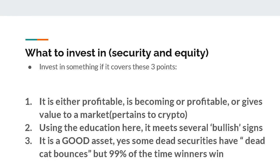A lot of people are wondering what they should be investing in. There are three big points to cover every time you're entering a position: you want to make sure the asset is either profitable, becoming profitable, or gives value to a market — which is more pertaining to cryptocurrencies. You want to meet several bullish signs and look at the fundamentals. You need to know what you're investing in — you can't just look at the price. Some securities that aren't good assets could go up in price, but 99% of the time, winners win.